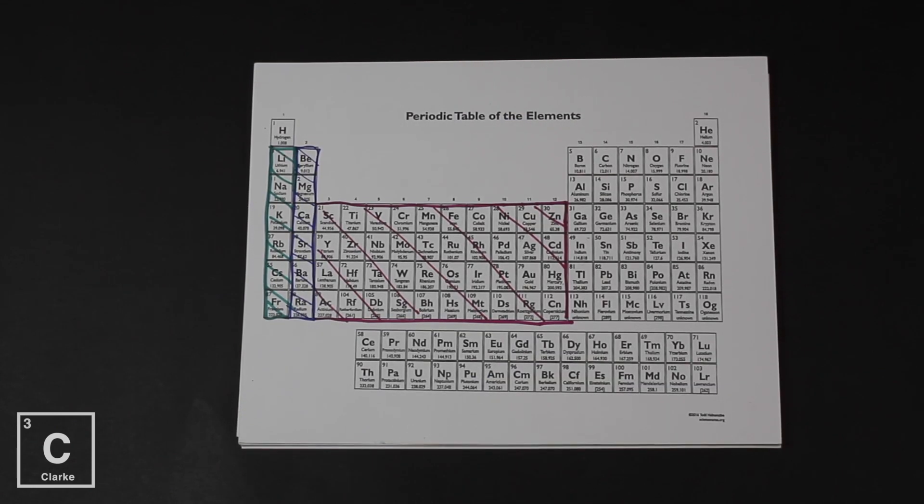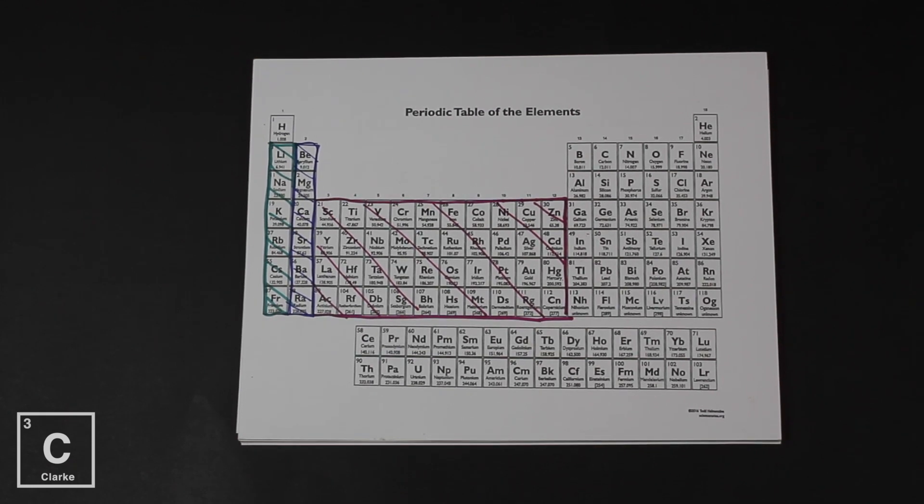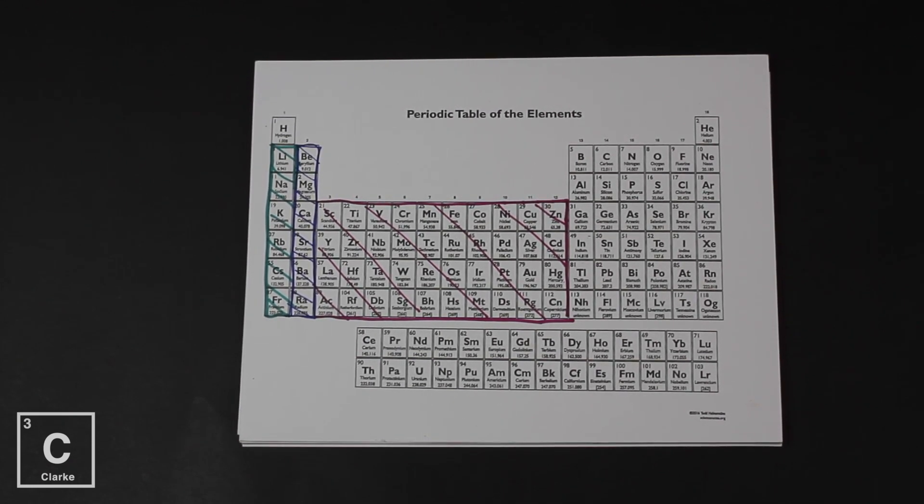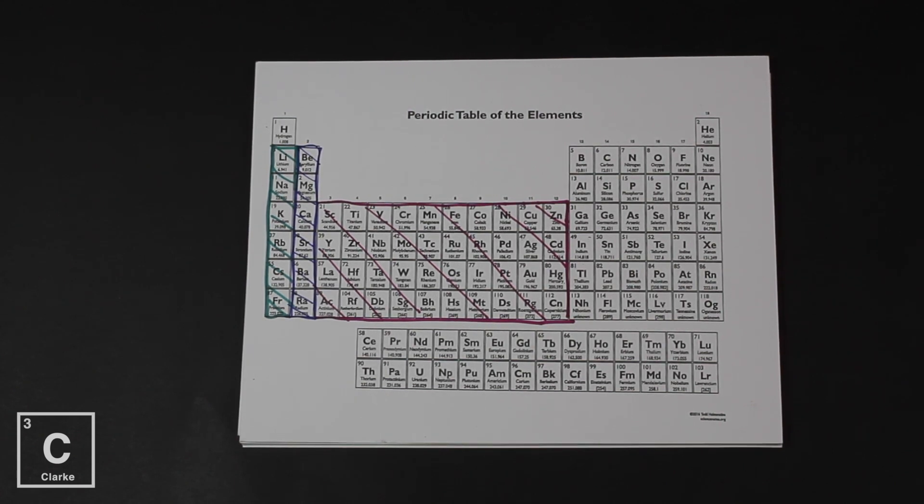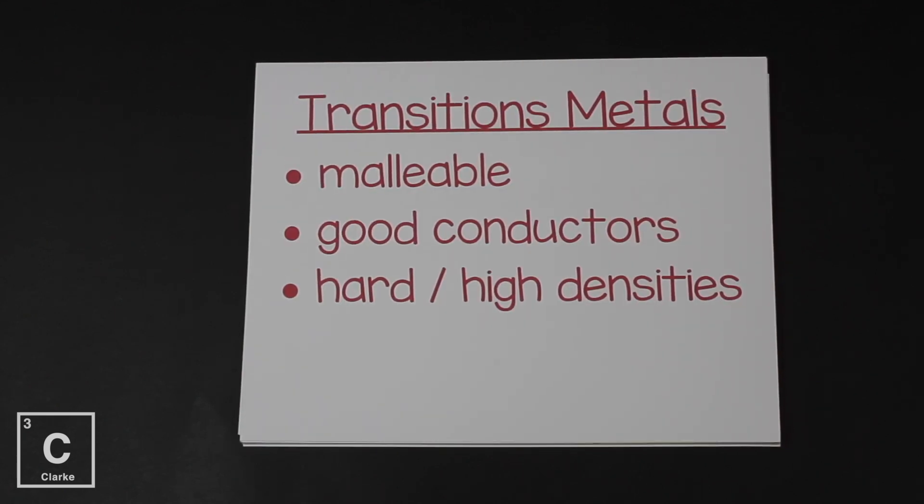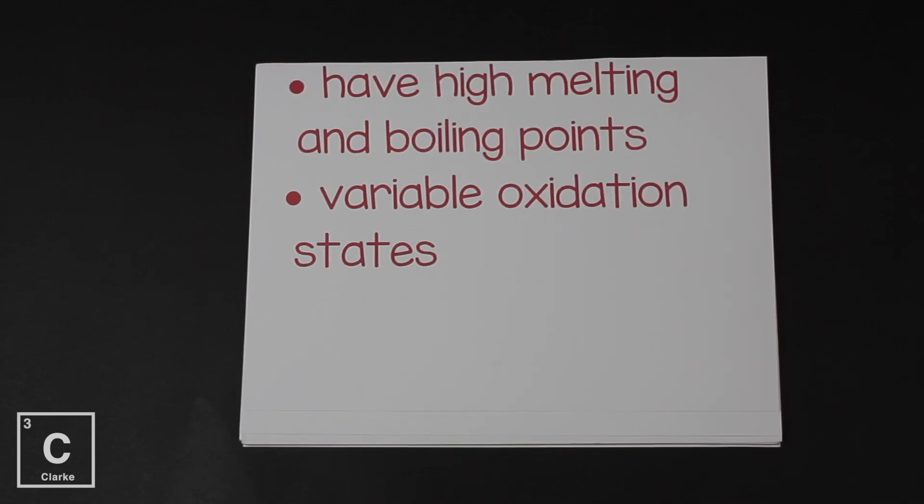This third special family of the periodic table takes into account more than just one group - from three through 12. I call these the short groups, but really these are called the transition metals. The transition metals are malleable. They're good conductors. They're hard. They have high densities. They have high melting points and boiling points, and they have a variable oxidation state.